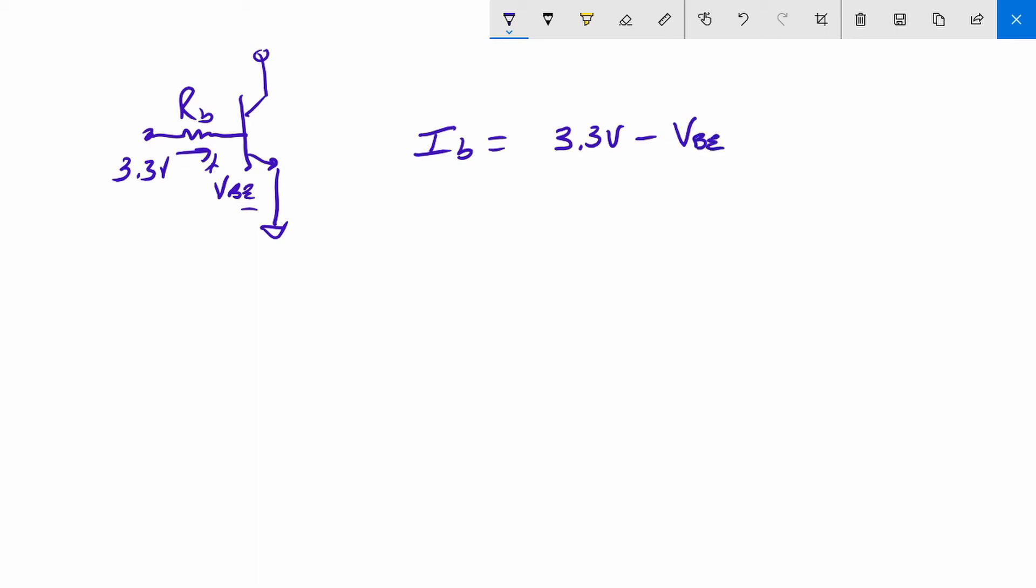And here's our base to emitter drop. And so therefore the base current I_B is equal to 3.3 volts minus our base to emitter voltage V_BE divided by the resistor in the base. That resistor is actually acting as a current limiting device. We can solve for that resistor.